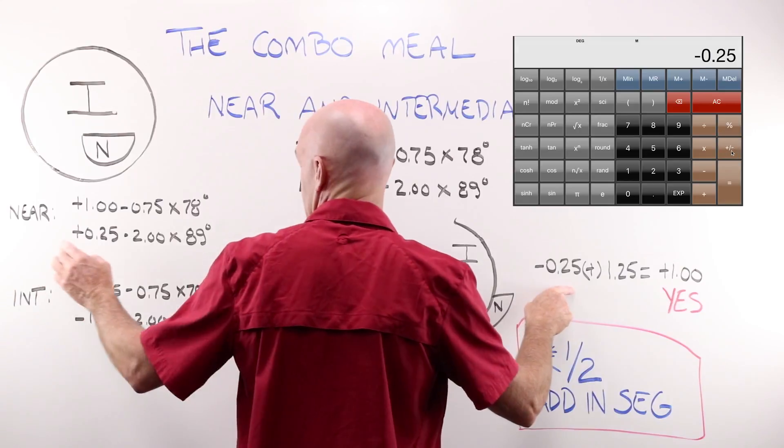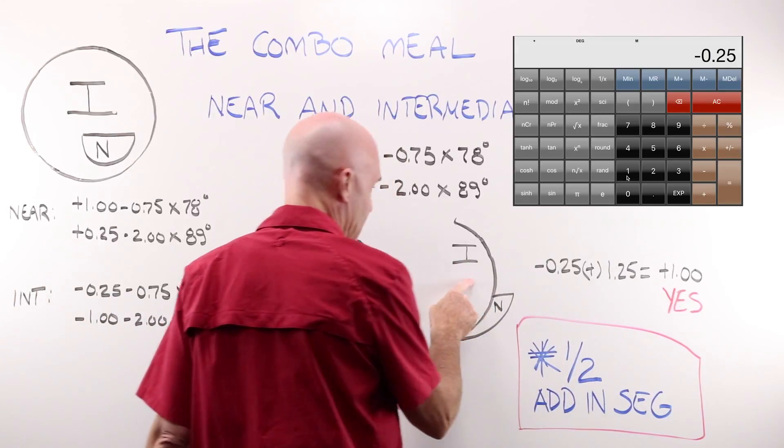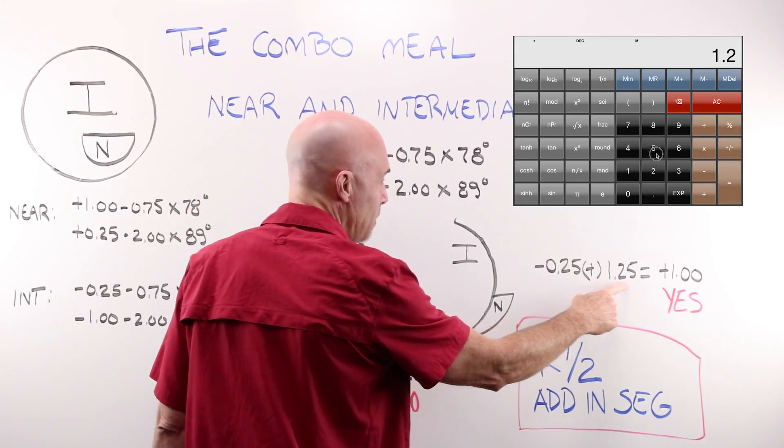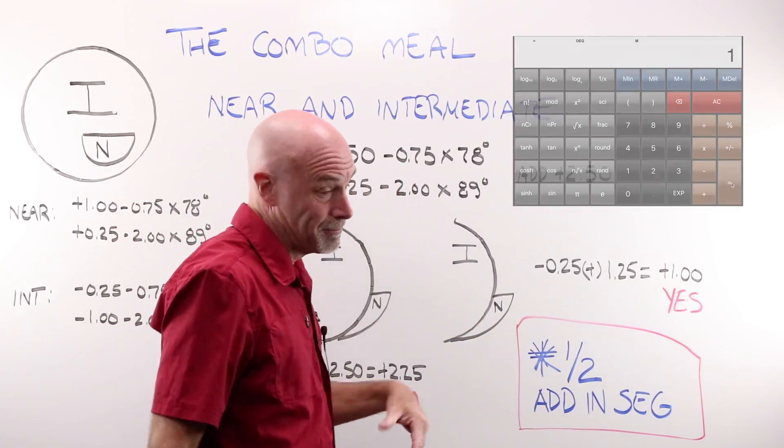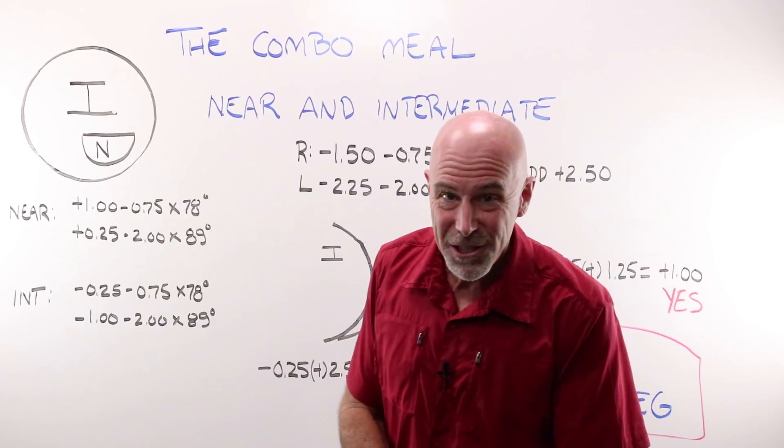So you need to remember to take half your add power, 125, if I have my minus 25 here, and I add 125, I end up at this one that I need here. That is the secret, the trick, the thing that we always do wrong when making a set of piano, so to speak, glasses.